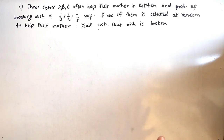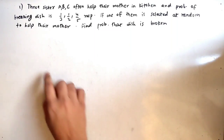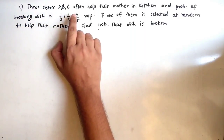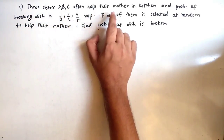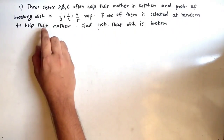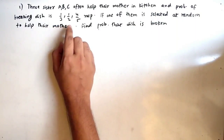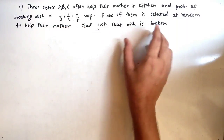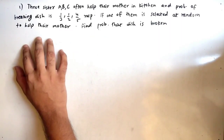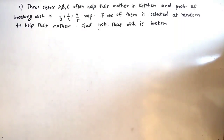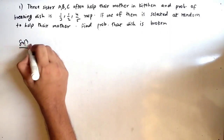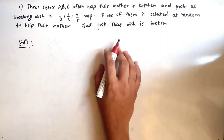Hello friends, in this video we will see some important probability sums. Our first question is: three sisters A, B, C often help their mother in the kitchen, and the probability of breaking dishes is 1/3, 1/2, and 4/5 respectively. If one of them is selected at random to help their mother, find the probability that a dish is broken. Basically, we need to find the probability that the dish is broken.